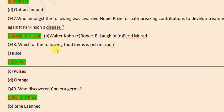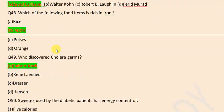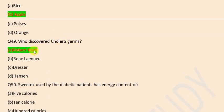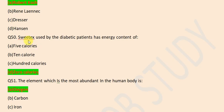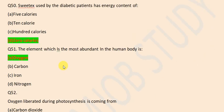Which of the following food items is rich in iron? Apple. Who discovered cholera germs? Robert Koch. Sweet eggs used by diabetic patients have energy content of 0 calories.